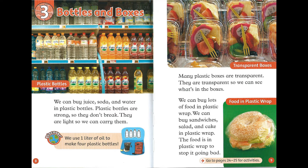Many plastic boxes are transparent. They are transparent, so we can see what's in the boxes. We can buy lots of food in plastic wrap. We can buy sandwiches, salad, and cake in plastic wrap. The food is in plastic wrap to stop it going bad.